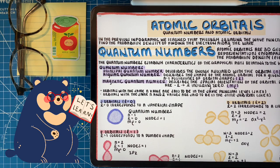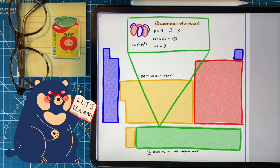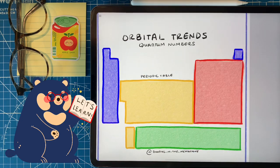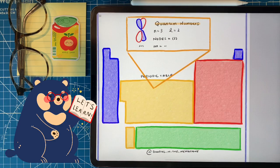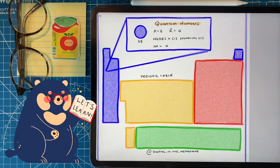The angular quantum number describes the shape of the atomic orbital. Its possible values range from 0 to n minus 1. Next is the magnetic quantum number, which describes the spatial orientation of that orbital. Its possible values go from negative l to l, including 0, and we represent it with ml. By referencing the periodic table, we can see the principal quantum number change as we go down the periods, introducing new angular quantum values, and in turn new magnetic quantum number values.